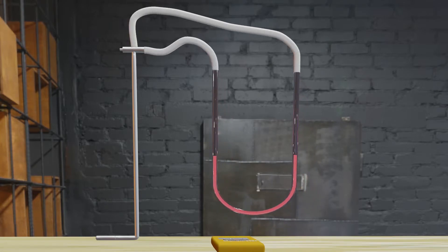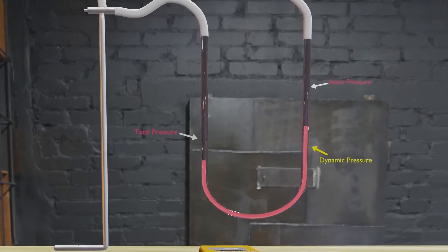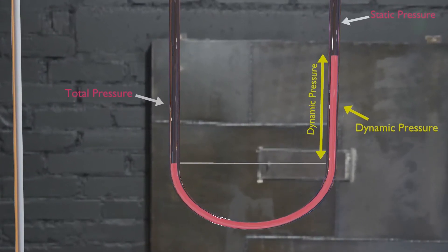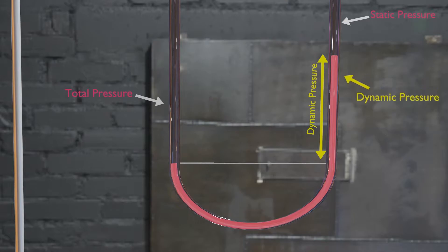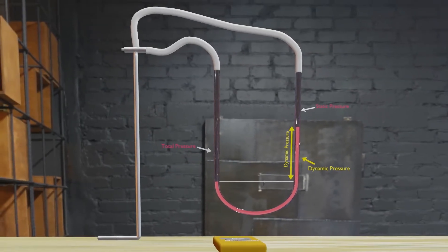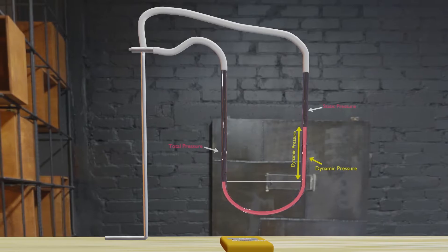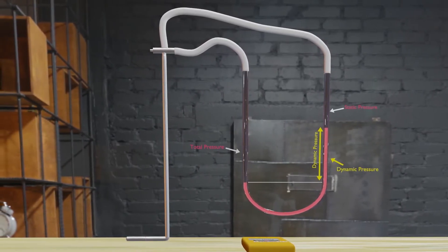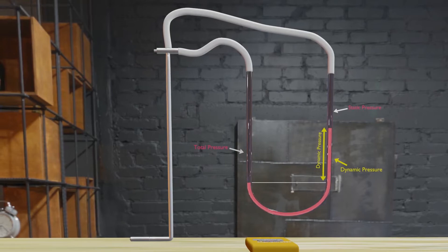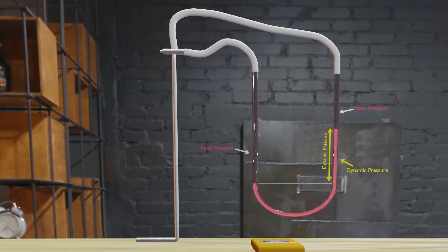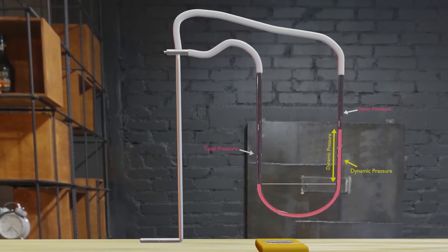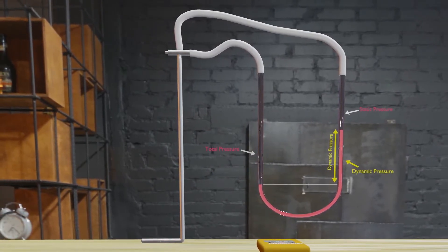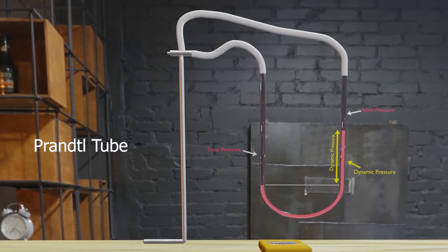The difference of both pressures lifts the liquid upwards. The height difference in the liquid level is therefore a measure of the pressure difference, and thus of the dynamic pressure or flow velocity. The Pitot tube and the U-tube together form the overall unit for measuring dynamic pressure. Such a probe is also called a Pitot tube.